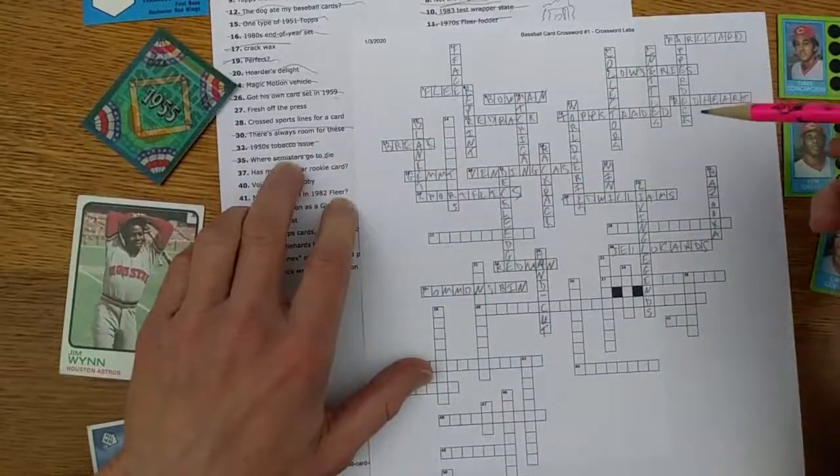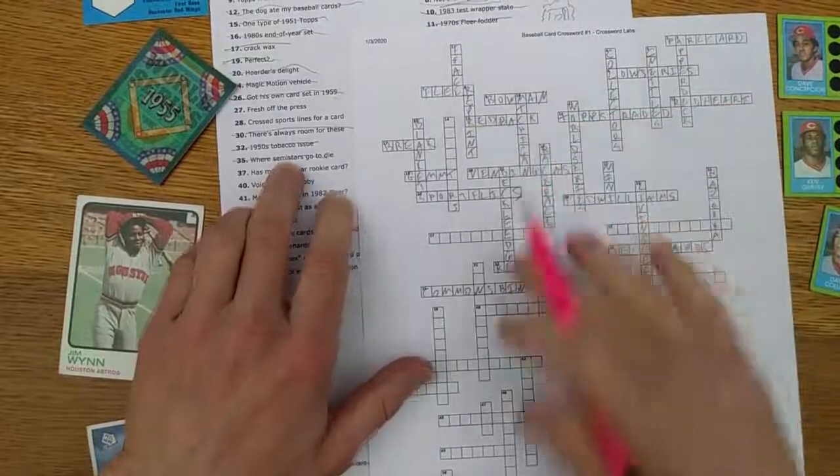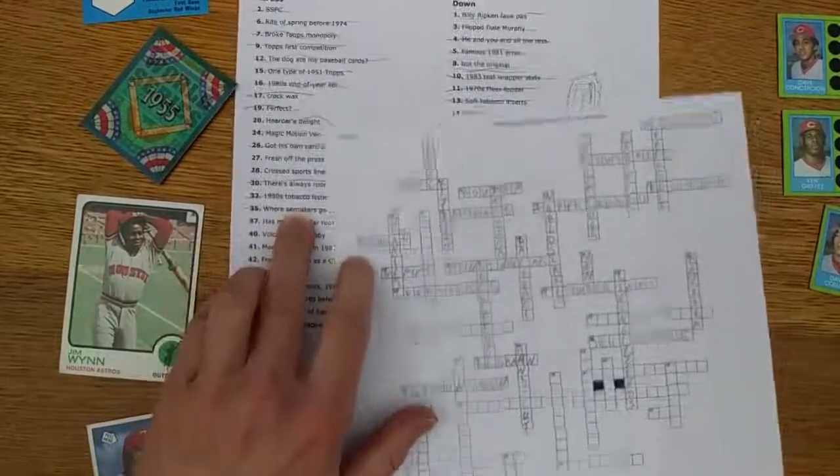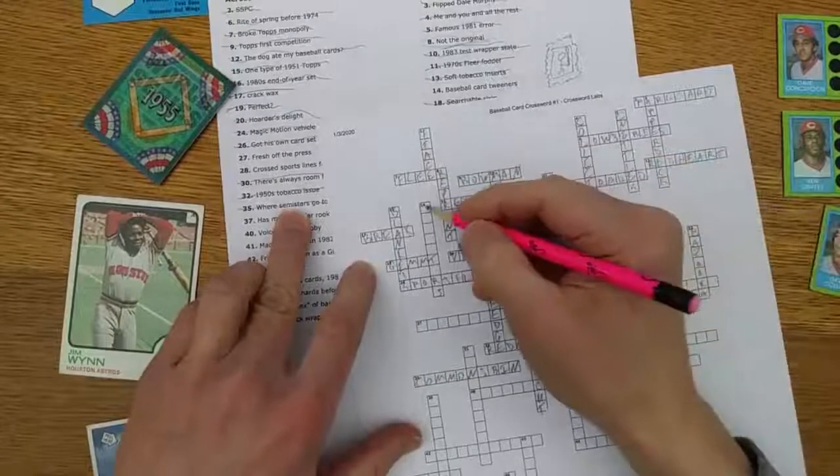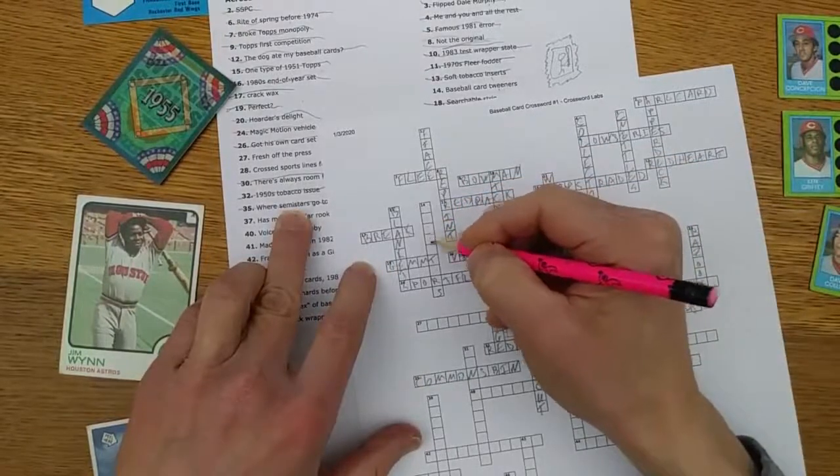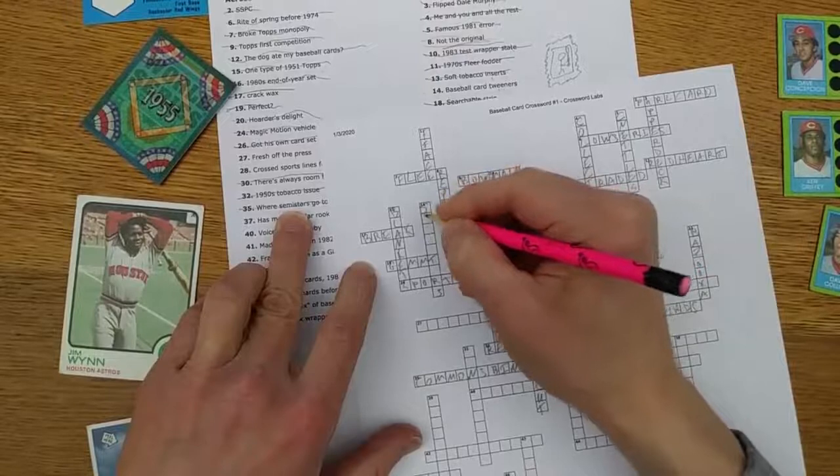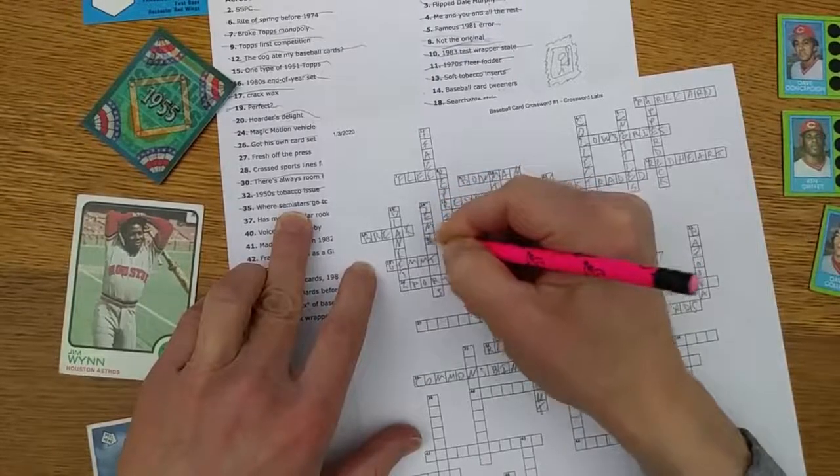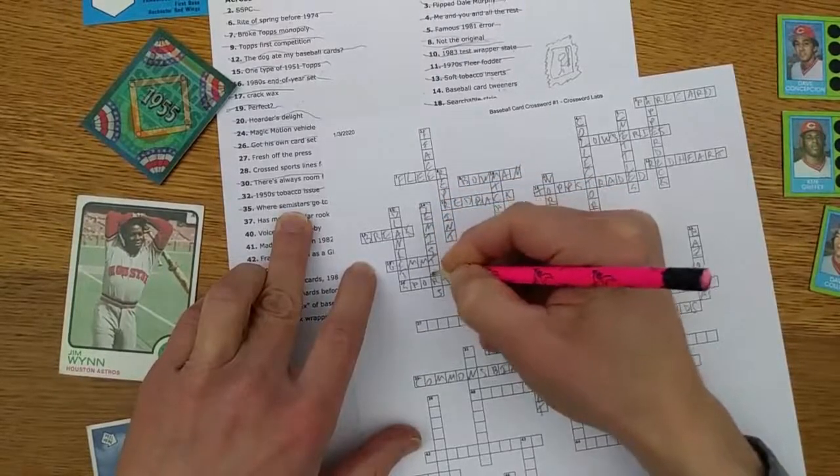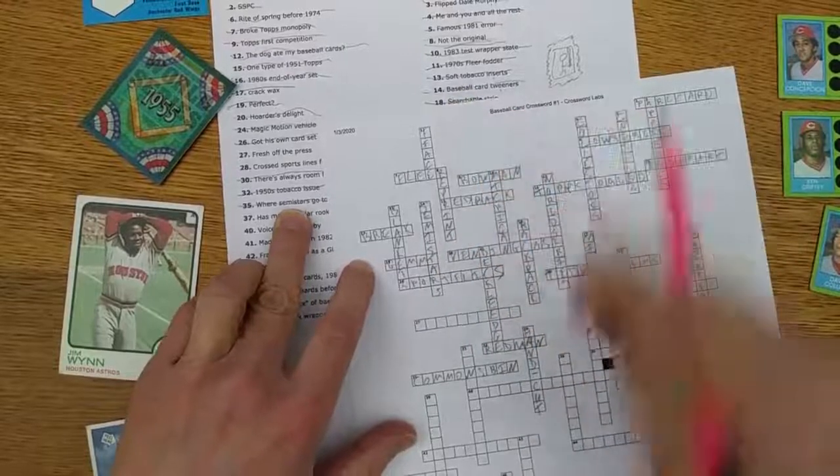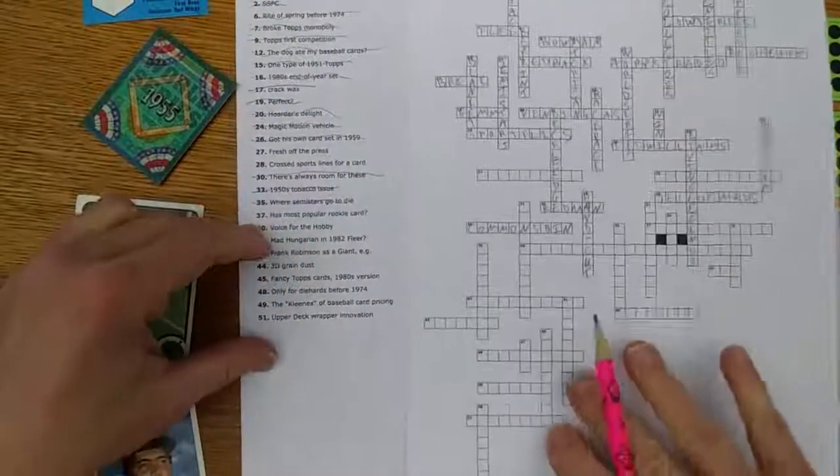And that gives me an idea about the tweeners, which was 14 down I think. Yeah, semi-stars, S-E-M-I. Yeah, that works. So they are those tweeners that you need to keep tabs on just in case. Every once in a while you got one that kind of breaks out.